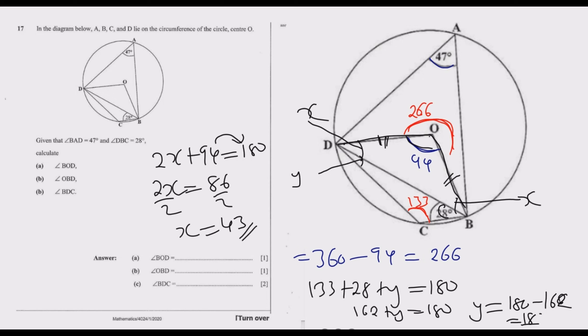We have found the possible angles. Let us now go to the questions. Question (a) asks us to find angle BOD—from B to O to D. We've already found that angle to be 94 degrees.